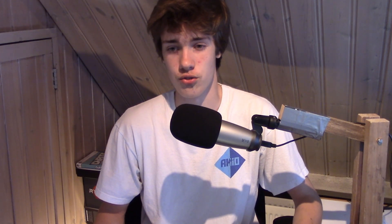And then there are also P states. These are performance states, and they're basically subcategories of the C0 state. The C0 state means the CPU is turned on, and this can be subdivided into the P states, where P0 means the processor is at its maximum frequency — maximum performance — and then P1 can be a lower level of performance, P2 an even lower level, and so on. Many people just take it for granted that a modern CPU changes its frequency to save power — when there is nothing to do, the frequency goes down and saves energy. That basically means it's going to a higher P state: if it goes to P4 instead of P0, it's a higher P state, but it means lower performance.